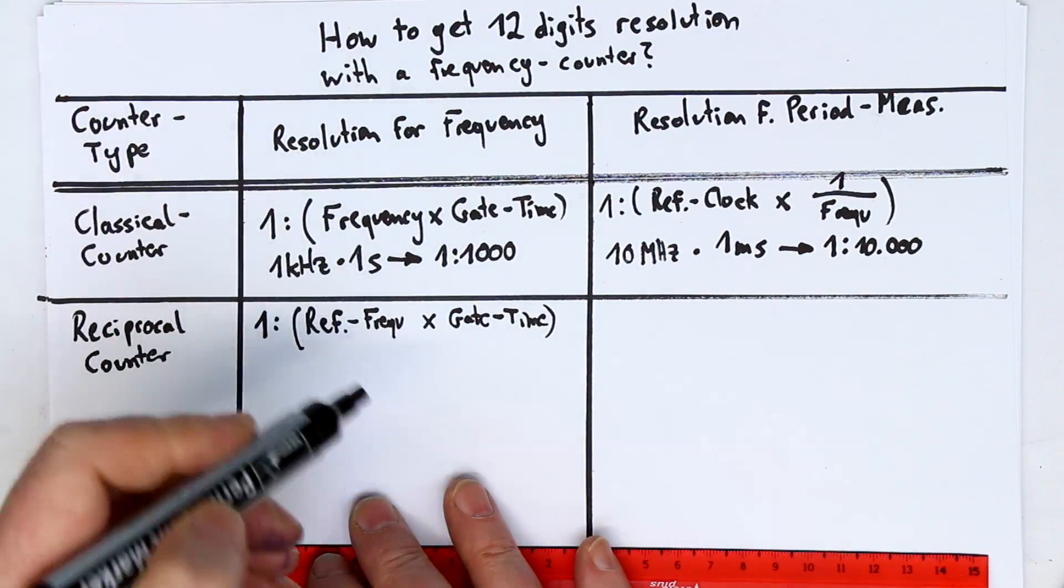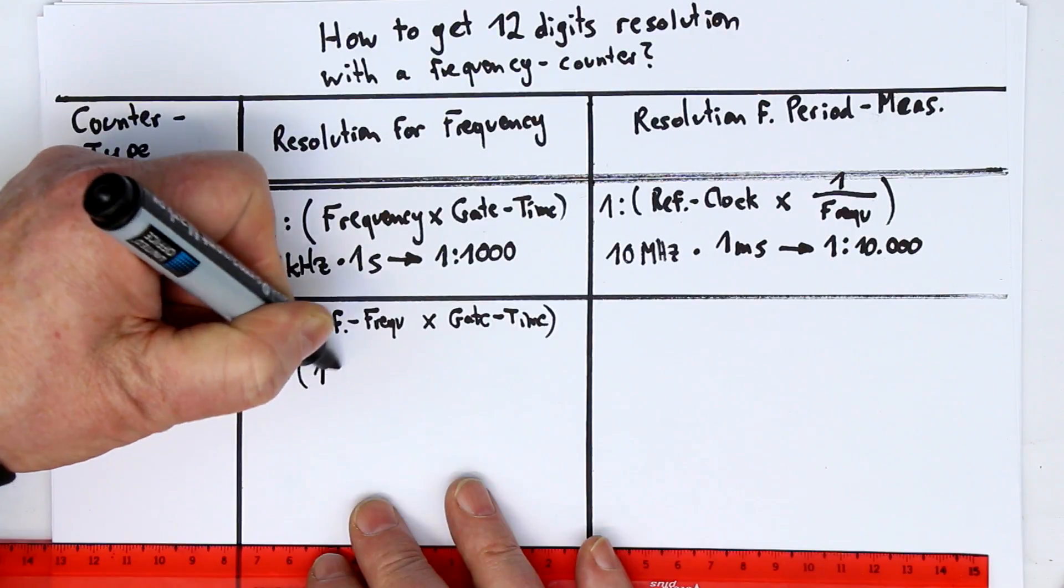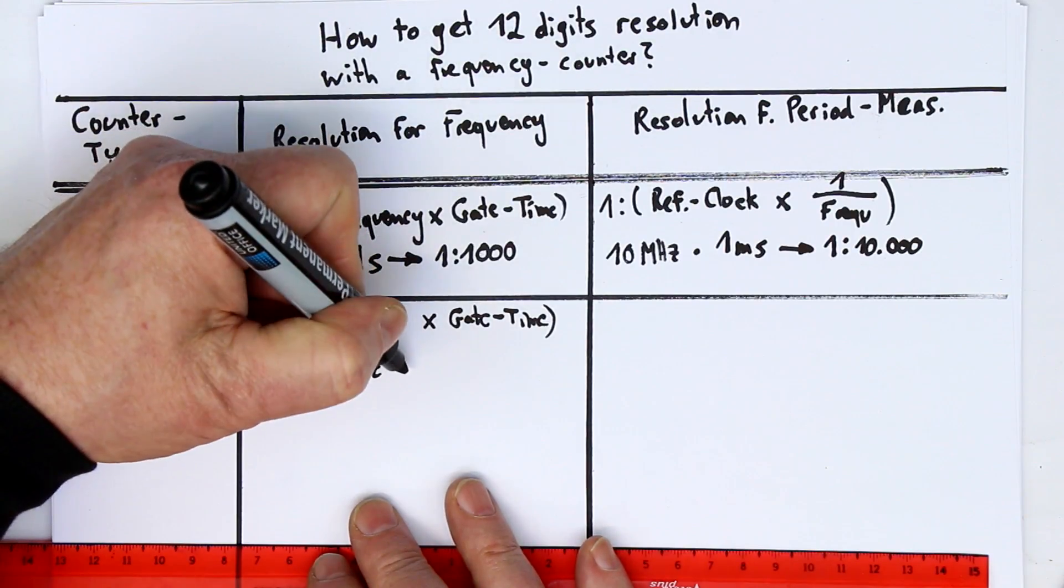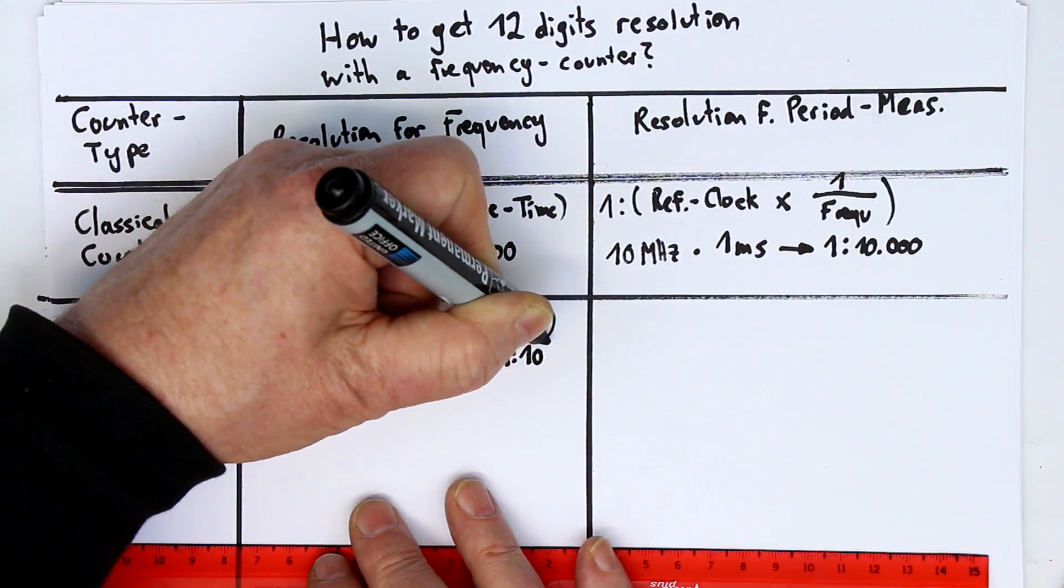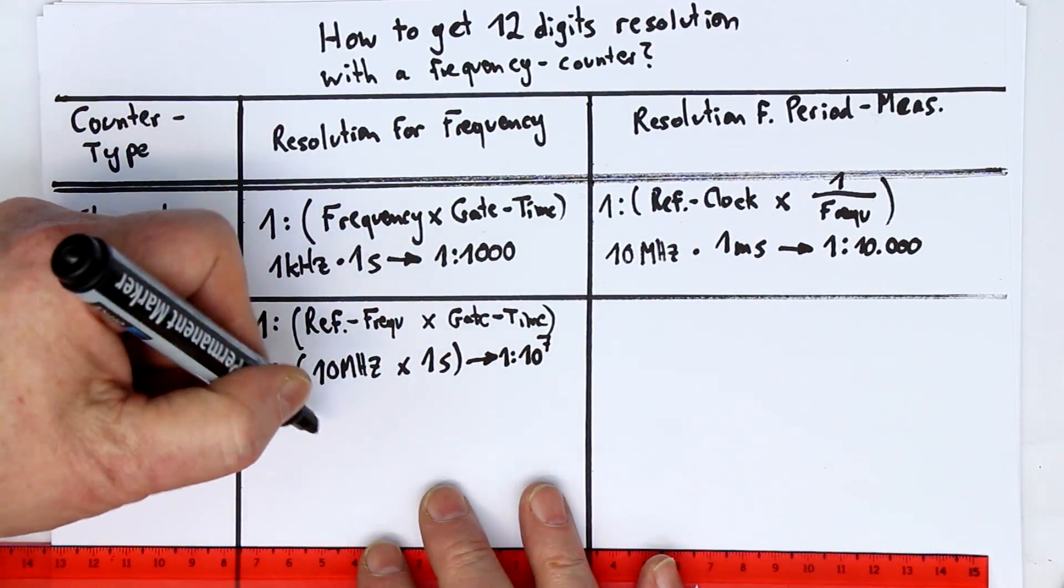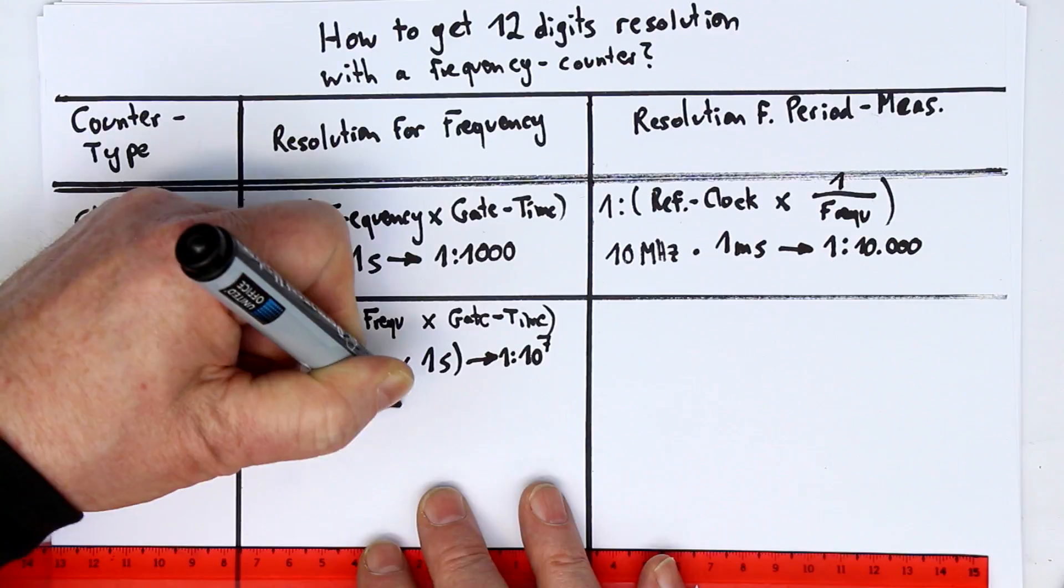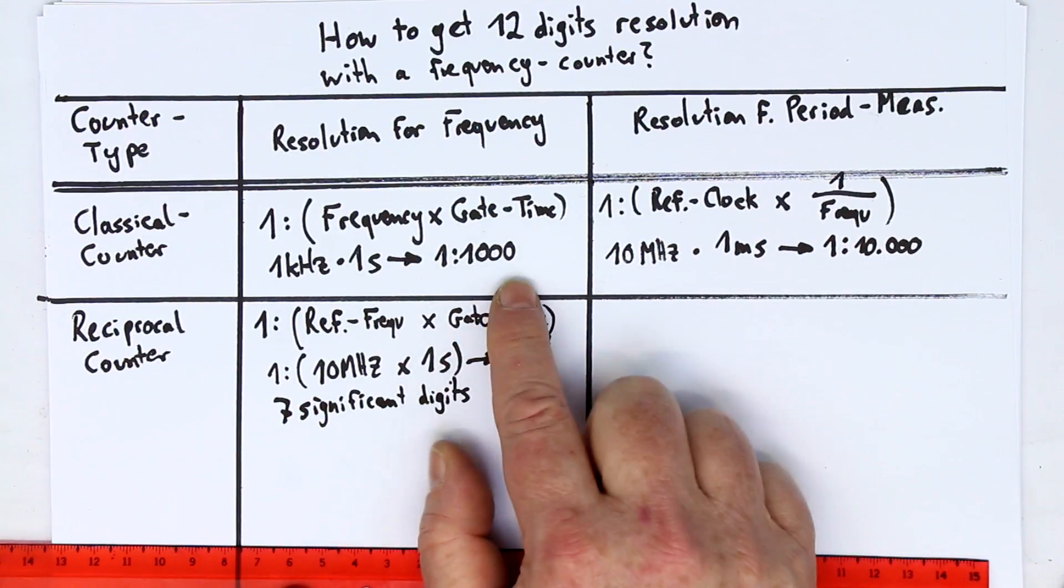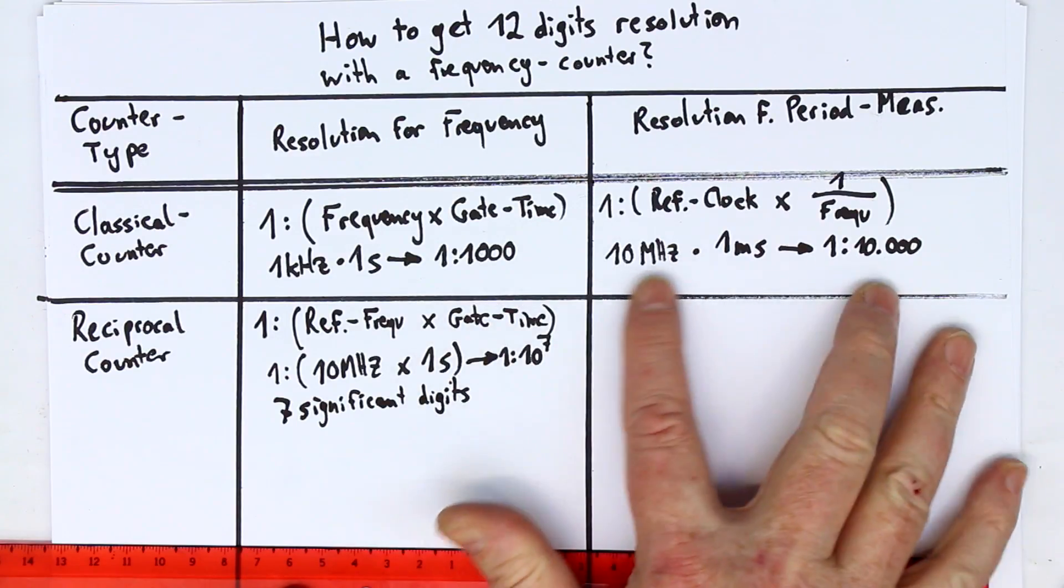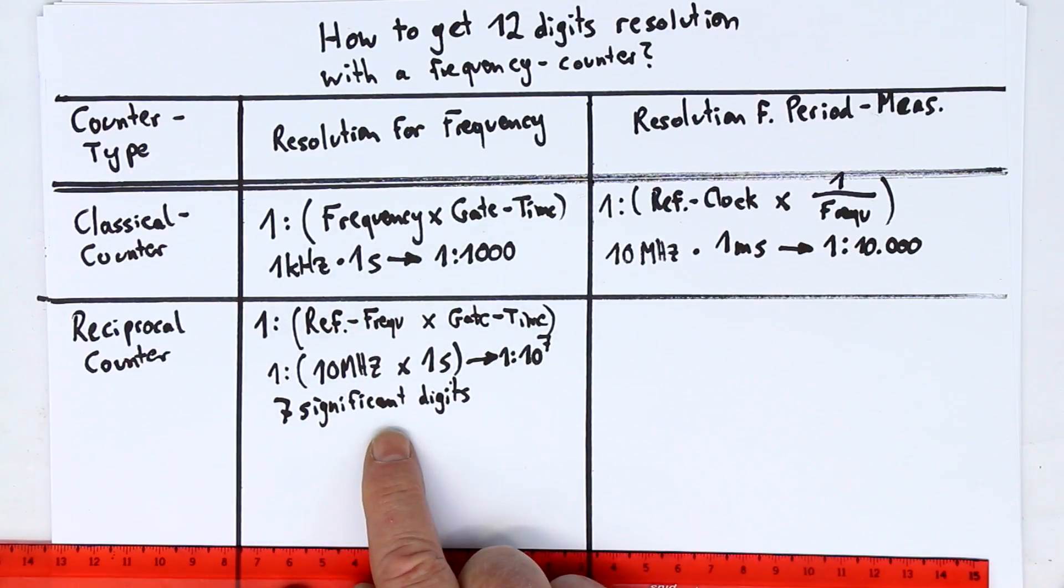So, let's take a typical example. Here above, we had 1 second of gate time, and we had 10 megahertz reference clock. So, let's take these typical values, 10 megahertz internal reference frequency times 1 second of gate time, and this gives you 1 in 10 millions, or 10 to the seventh power, and this is 7 significant digits for whatever frequency you measure. And you can see what a significant improvement this is from 3 to 4 significant digits, in worst case at frequencies somewhere in the middle of the spectrum, up to 7 significant digits, no matter if you measure 100 megahertz or you measure 1 hertz.